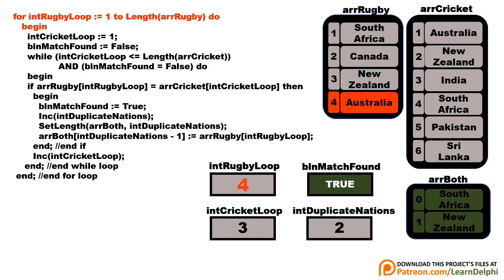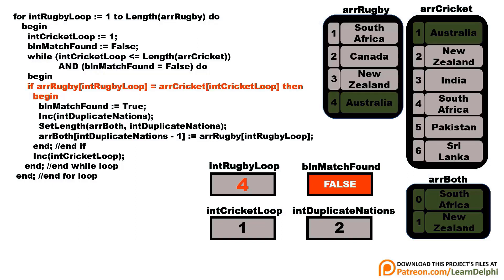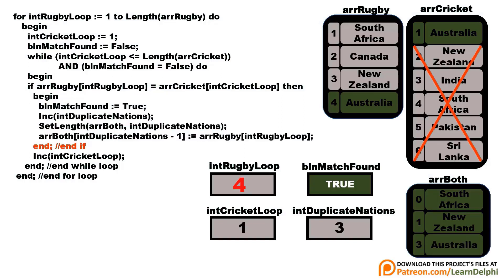Then the outer loop moves on to Australia. Before the inner loop starts searching, the cricket loop's counter is set back to 1 and the flag is set to false. The inner loop starts from index 1 again and finds Australia immediately — it's a match. The flag is set to true, Australia is added to the third array, and it skips the rest of the cricket array. The outer loop is now done and the whole process is complete. As soon as a match is found, the boolean is set to true, causing the inner loop to exit. The inner loop always exits in two cases: when the flag is true, or when it has processed the last element.